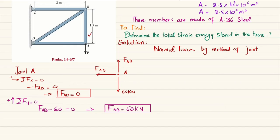By Newton's third law, the force in member AB is tensile. So the force in member AB is a tensile force of 60 kN.